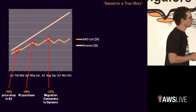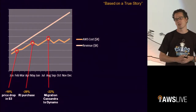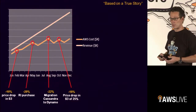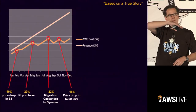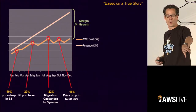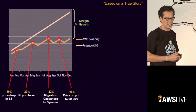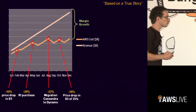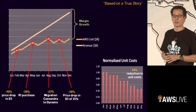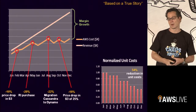Then we helped their team move to DynamoDB, again saving significant cost. And then towards the end of the year, we dropped the pricing of S3 again. So it now starts looking really similar to what I just showed — your revenue is going up but your costs are going down, and that basically means your margin is growing. That's what you want. You want to make money at some stage. If you take all these things together and look at the normalized unit cost, there was a very significant reduction in their overall cost by leveraging all these things and how they come together.